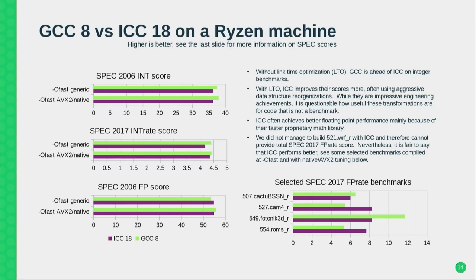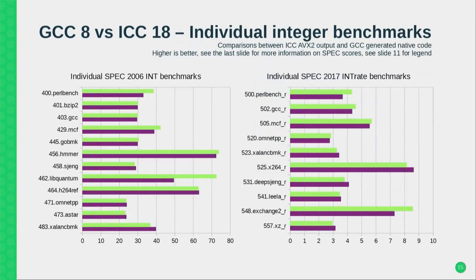Looking at the overall SPEC results: the integer scores are actually slightly better than ICC, though it is probably more fair to say we are on par. On floating point we are doing equally well or are slightly behind. On individual benchmarks, libquantum is one where we do much better than Intel without LTO — partly because ICC just doesn't perform all optimizations it could. Exchange2 on the other hand appears genuine — Intel probably hasn't had as much time to look into it.